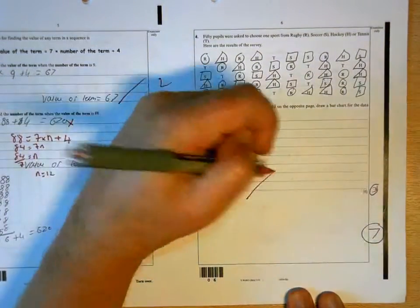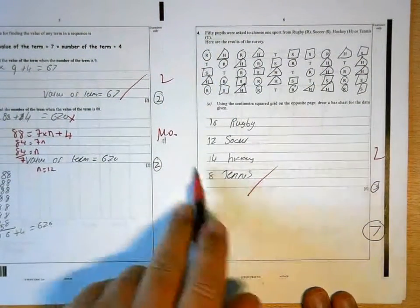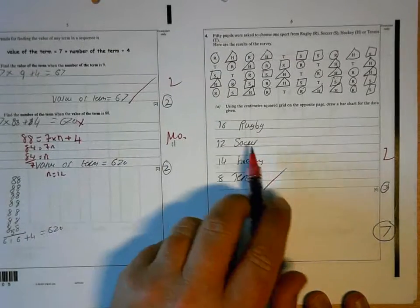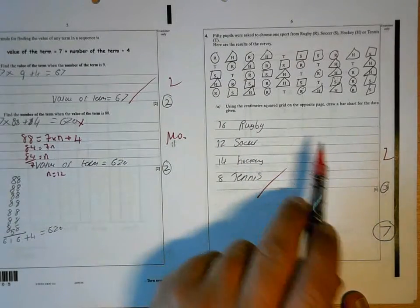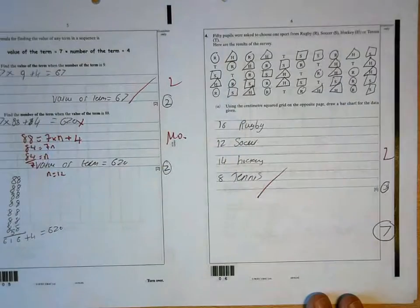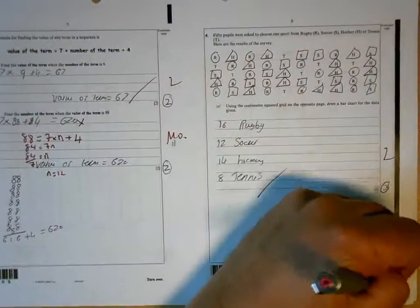16, 12, 14, 8 is good. But they would be looking for you to set that out as a frequency chart where you'd have sport, tally frequency, something like that is what they'd be looking for. 4 for the page.